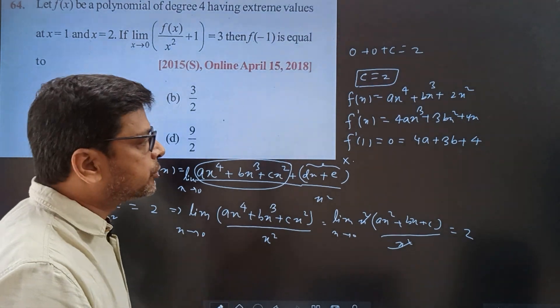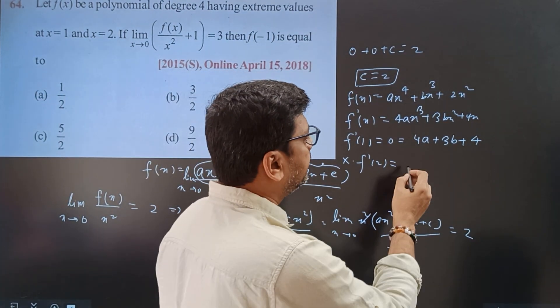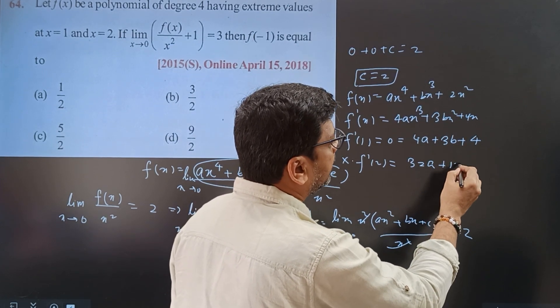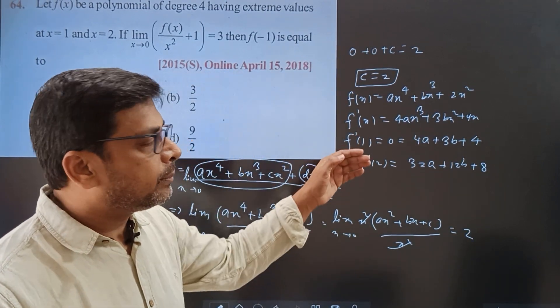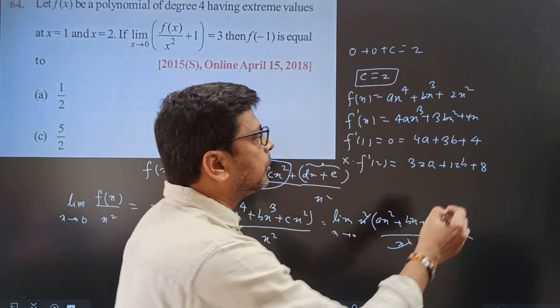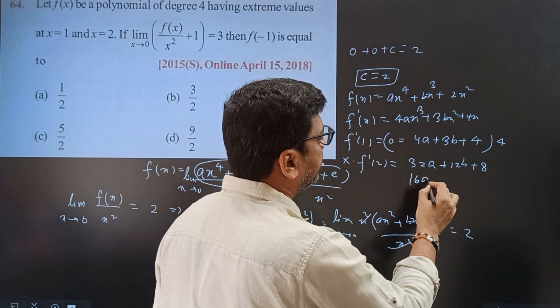This will be 4a plus 3b plus 4. And f'(2), if we put x value as 2, this will be 32a and 12b plus 8. We will try to find the values of a and b.